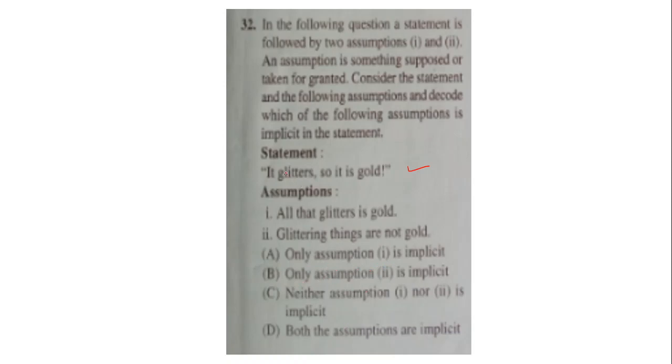Let's read it again. Statement saying it glitters so it is gold. The assumption says all that glitters is gold. This is true because whosoever said the statement, he observed that all the things that glitters is gold. That is why he said it glitters so it is gold. Hence, first is implicit. Let's read the second. Glittering things are not gold. So this assumption is wrong because they are saying it glitters so it is gold. So the correct answer here is only assumption one is implicit. All those students who have marked option A for this, their answer is correct. Also, I would like to tell you if you have any doubts or if there is any change in the answer, we will let you know in the comment section.